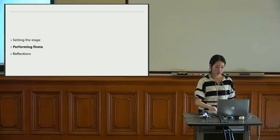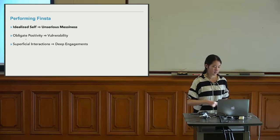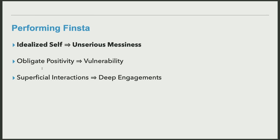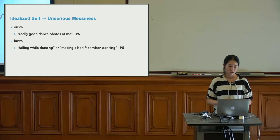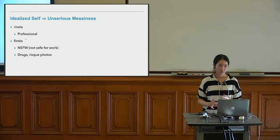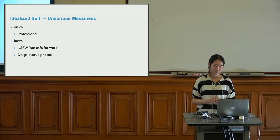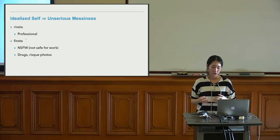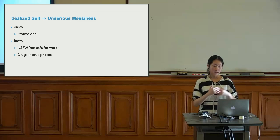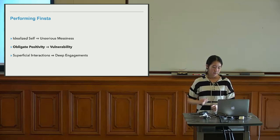How do they perform on Finsta? Here is where we find three kinds of reconfigurations. The first is presenting from an idealized self to unserious messiness. For example, participant five likes to dance — her Ringsta shows really good dance photos, but her Finsta shows her falling while dancing or making a bad face. People are also aware of a professional network on Ringsta, while Finsta becomes a place for content that is not safe for work. Screenshots also revealed stigmatized content, for example related to drugs or risky photos. They have turned idealized self-presentation on Ringsta into unserious messiness on Finsta.